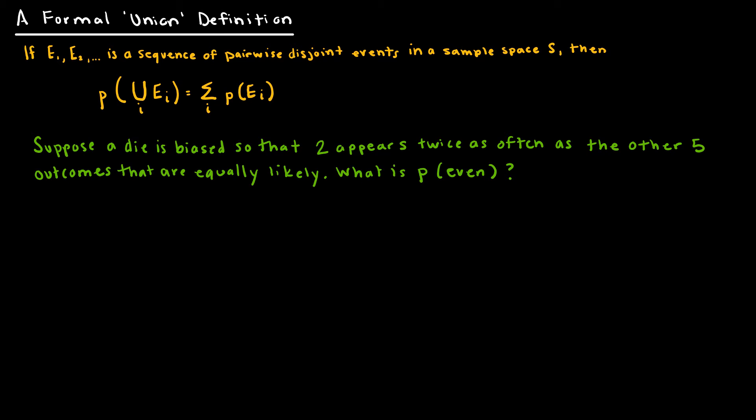Here's another union definition. Remember when we talked about the union, if you are looking for the probability of the union of two events, we would take the probability of A plus the probability of B, and then subtract if there was any overlap. What this one is saying is if you have pairwise disjoint events, that means there is no overlap, so we don't have to subtract. Same formula, different notation.